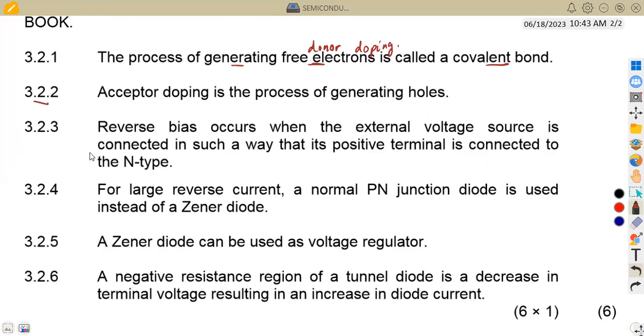3.2.2, acceptor doping is the process of generating holes. So this is actually true. So here we say this is false for the previous one.